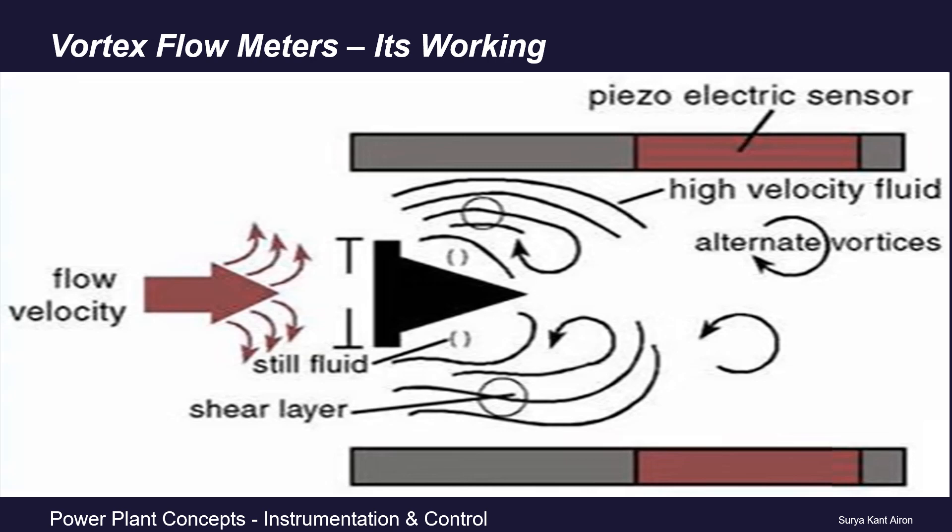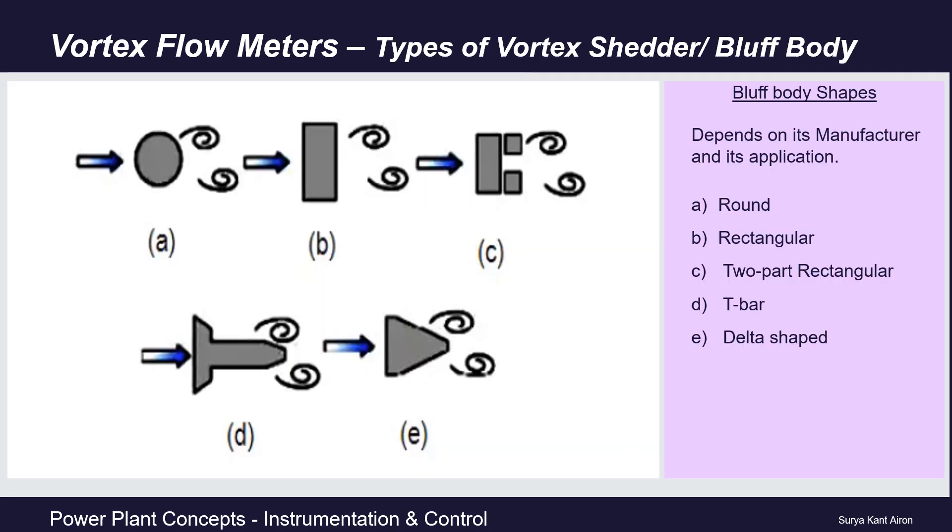The sensor detects and counts the number of vortices generated, then sends this vortex count to the converter unit, which is part of the electronics. Based on this vortex count input, the converter unit calculates how much fluid is flowing through the pipeline. The fluid flow rate is directly proportional to the number of vortices generated.